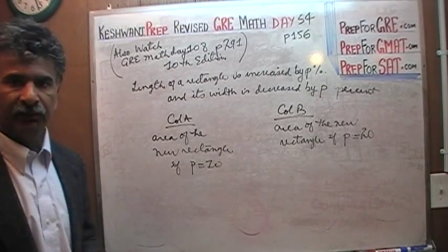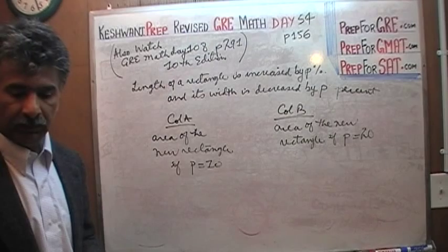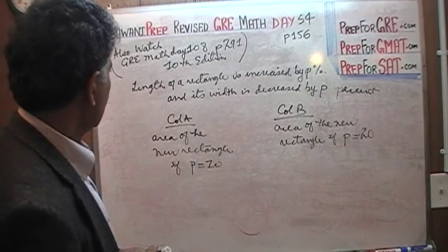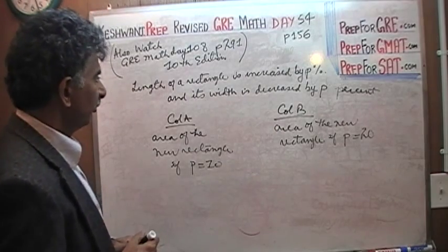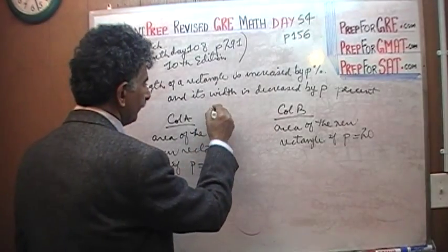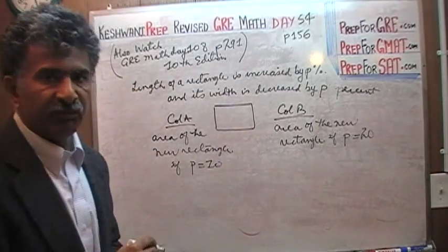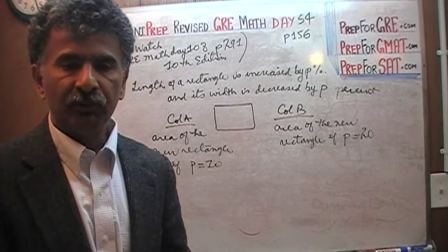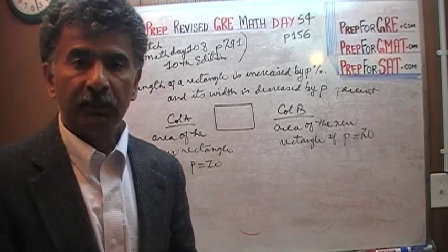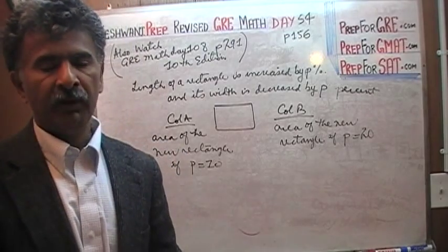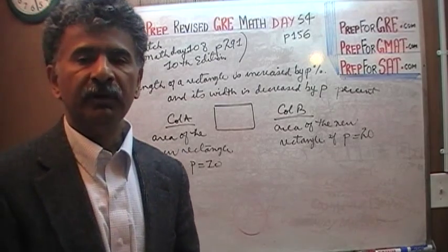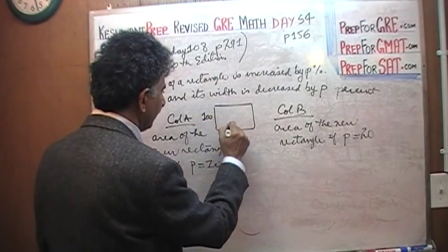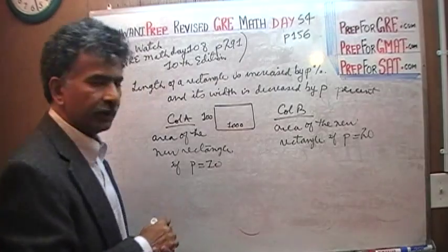So what do we do? Well, the easiest and simplest way to take care of this problem is to make up a rectangle. Let's make up our original rectangle. And since this problem is dealing with the concept of percentage, the easy numbers to deal with would be numbers that are multiple of 100. It's very easy to figure out the percentages when we are dealing with numbers that are multiple of 100. So I am going to make up a rectangle. Let's pretend it is 100 by 1000.